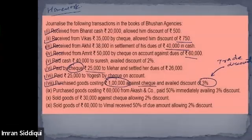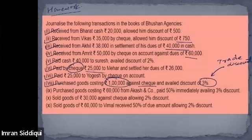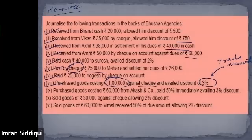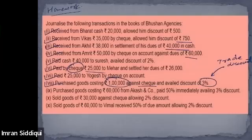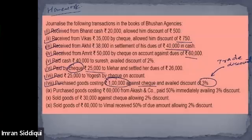Transaction nine: purchased goods costing 60,000 from Akash and Company, paid 50 percent immediately, availing three percent discount. Labiba is asked for the journal entry. The entry involves purchase account, Akash account, cash account, and discount received account.